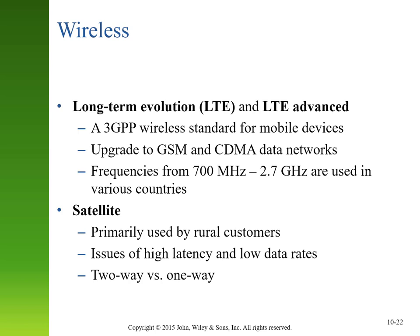Another possible alternative is the use of satellite. This has traditionally been used by very remote locations. The biggest issue is that it has very high latency — it takes a long time for the signal to get from place to place — and it has relatively low data rates. So using satellite is not a great option for most Internet users.